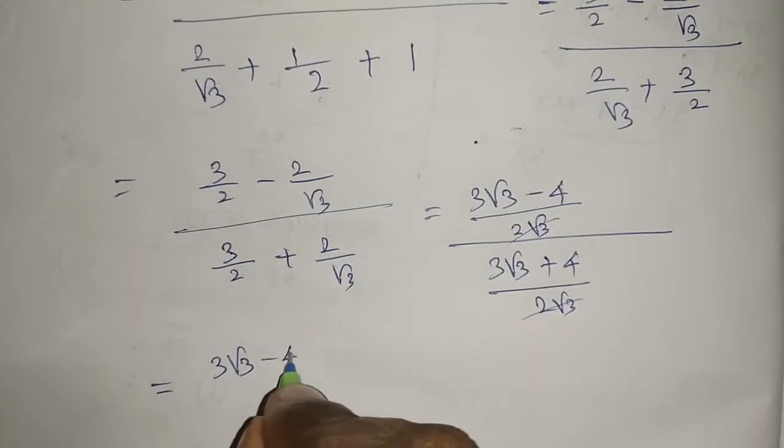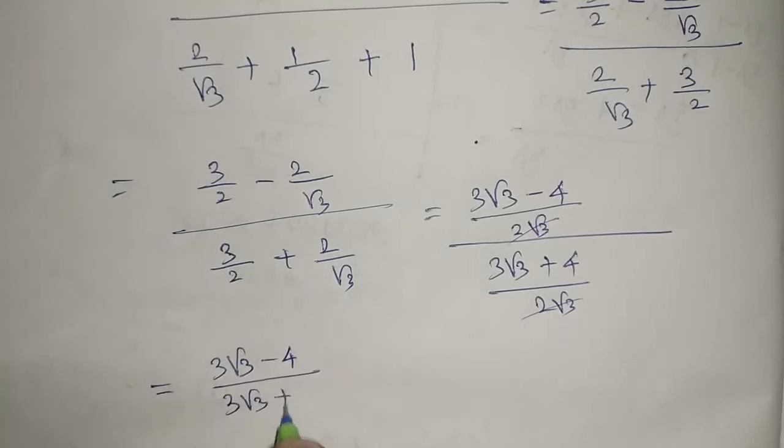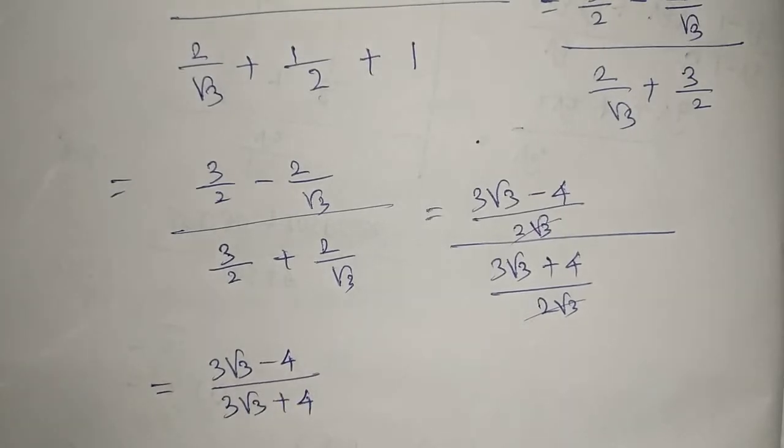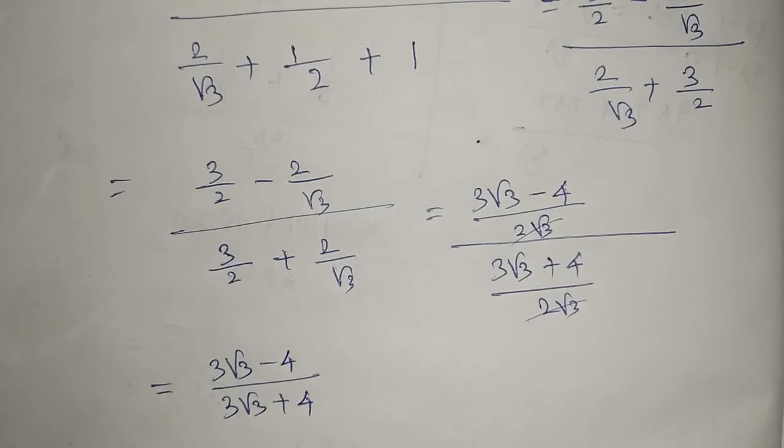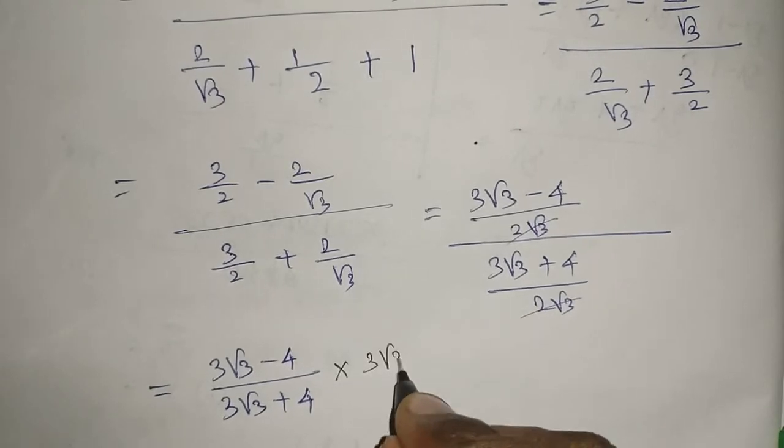Then what we have remaining is 3√3 - 4 divided by 3√3 + 4. Now we need to get positive values, so I am going to take the conjugate. Conjugate means in the denominator, opposite sign we have to multiply.